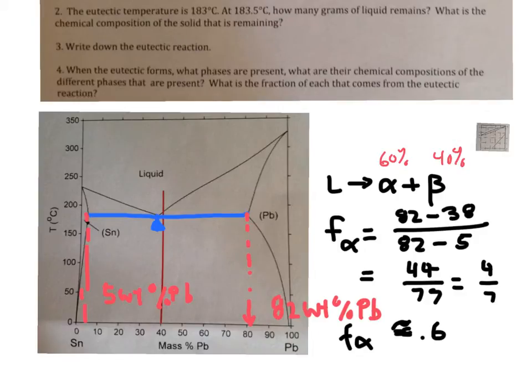And we know that the alpha has a chemical composition given by that point there, read off this axis. And beta has a chemical composition given by that point, read directly off this axis.